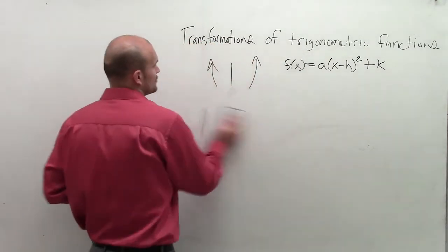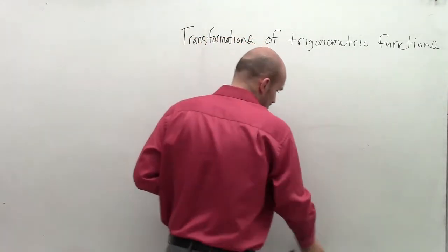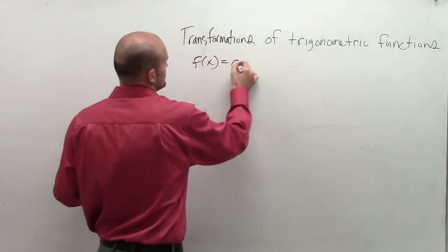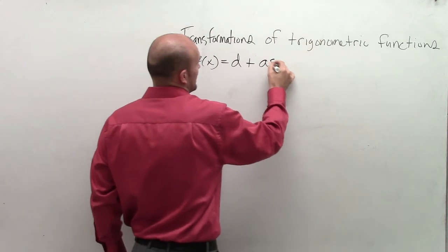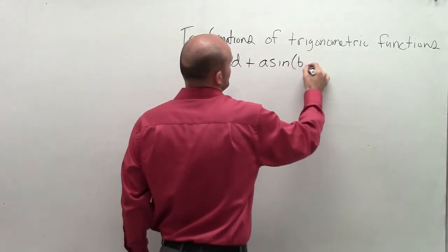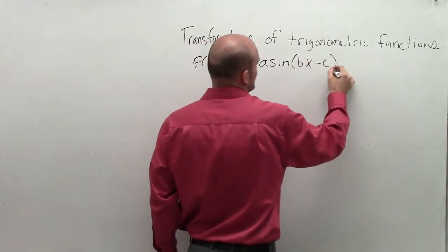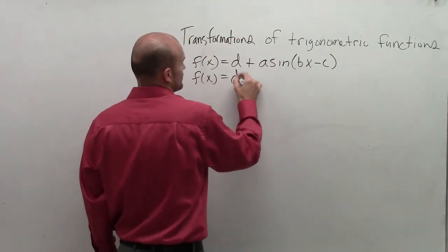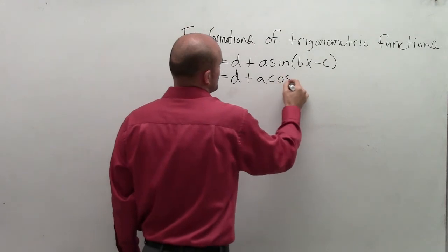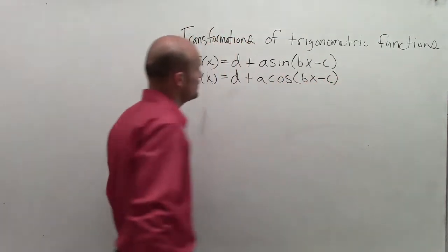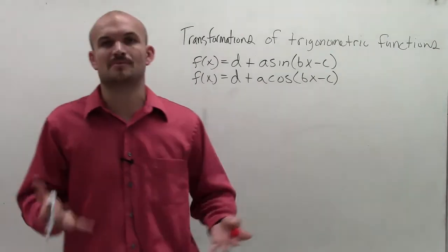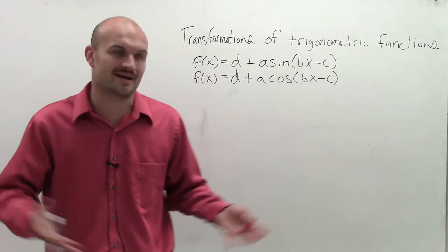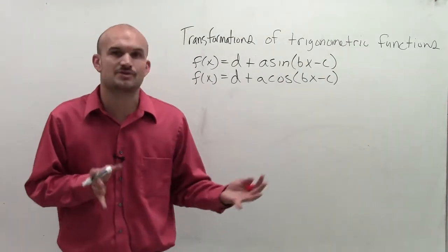Now what we're going to do is go over the two standard trigonometric functions and how we actually want to write our standard form. Let's say I have f(x) equals d plus a sine of (bx minus c), and f(x) equals d plus a cosine of (bx minus c). Here we're going to have very similar things. It doesn't really matter what my letters are that I'm using, but you need to understand the transformations.